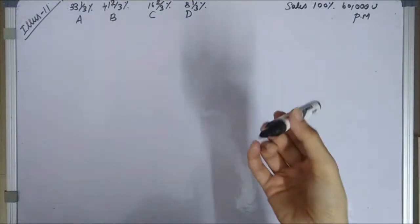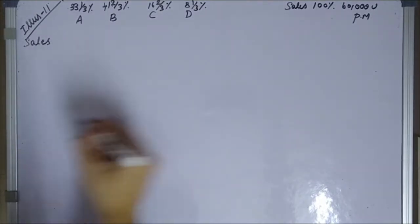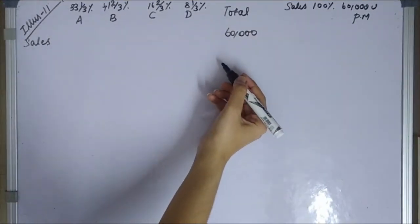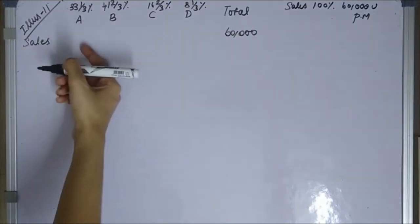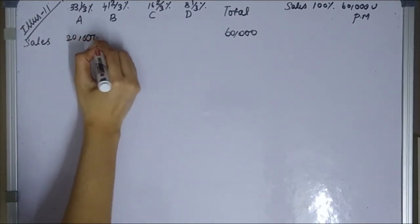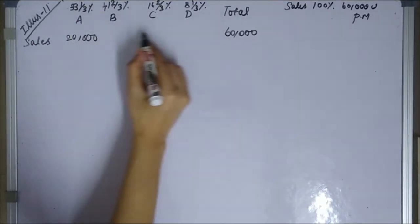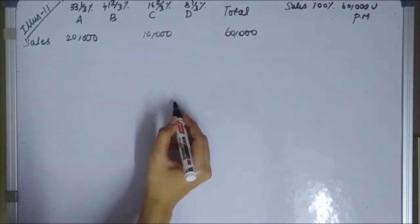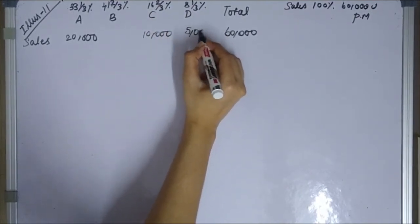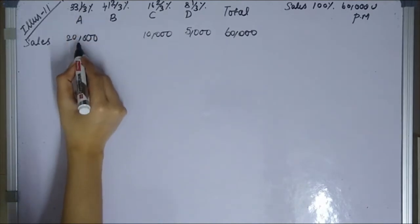So sales total is 60,000. Product A sales: 60,000 × 33 and 1/3% = 20,000. Product B sales: 60,000 × 41 and 2/3% = 25,000. Product C sales: 60,000 × 16 and 2/3% = 10,000. Product D sales: 60,000 × 8 and 1/3% = 5,000.